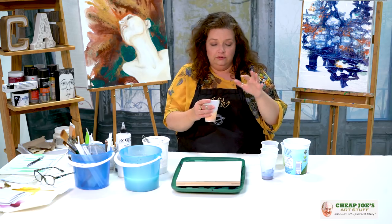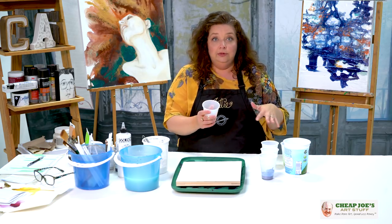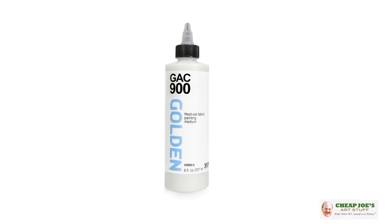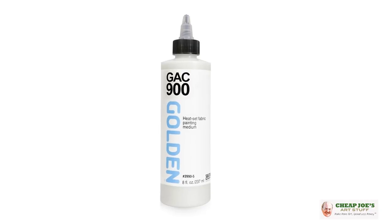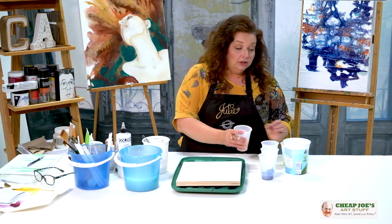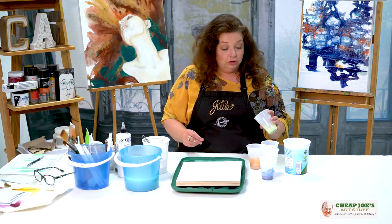I have a mixture of golden and Cheap Joe's Prime and a whole bunch of other stuff in here. But I've mixed them with a little bit of GAC 900 which is golden acrylic compound 900 as a fluid medium to get them into this fluid state. So all the different colors are mixed up individually.